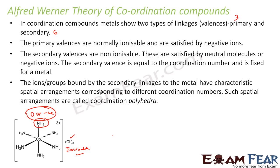The ions or groups bounded by the secondary linkage to the metal have a characteristic spatial arrangement in three-dimensional space, corresponding to different coordination numbers. For example, a coordination number of 6 gives what is called octahedral geometry. This three-dimensional arrangement of a coordination compound is called coordination polyhedra. This octahedral arrangement is shown here.